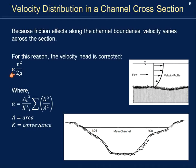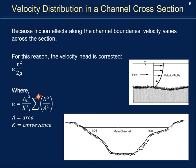To correct for velocity distribution, we multiply the kinetic energy v²/2g by alpha, a correction factor. Alpha equals the total area — summing the left outer bank, main channel, and right outer bank — divided by the total conveyance, times the sum of individual k³/a² values for each sub-section. We'll work through this in the example.